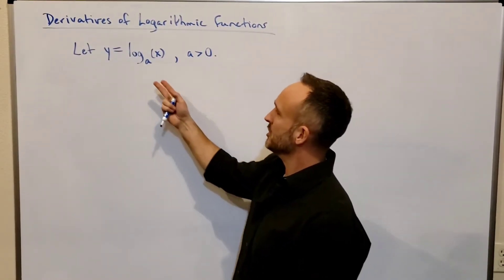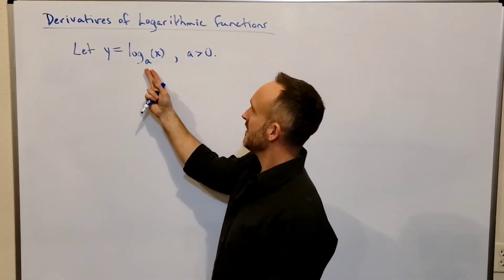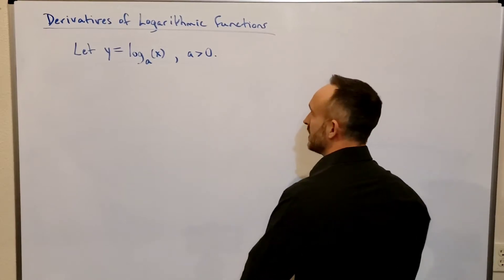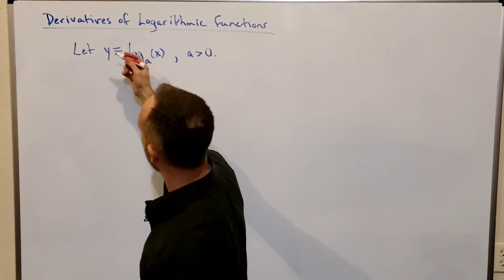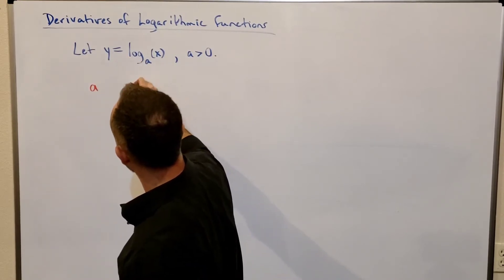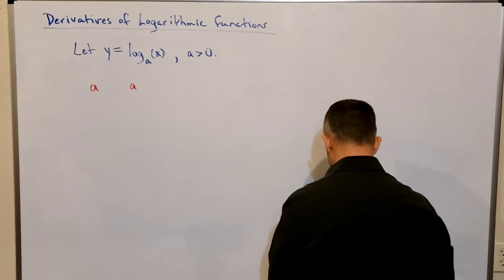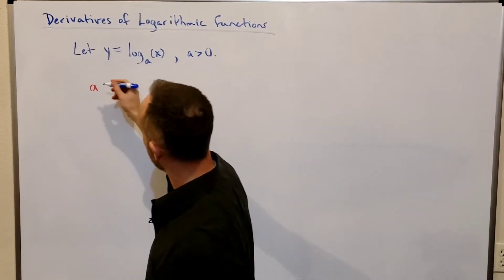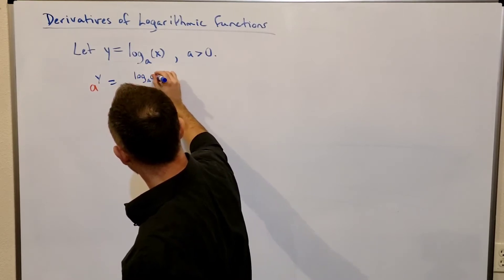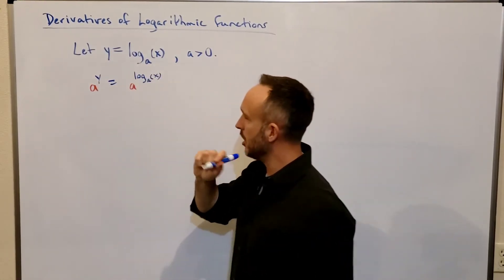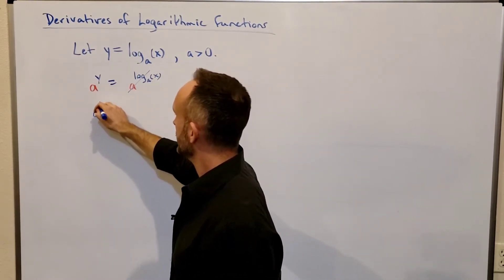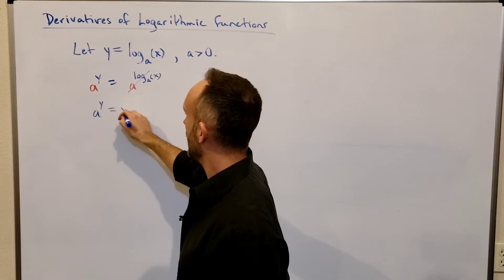The good news is that the inverse of a log function is an exponential function. If I apply a base of a to both sides, the left side becomes a to the y power and the right side simplifies — the log is undone — giving us the equivalent equation a to the y equals x.